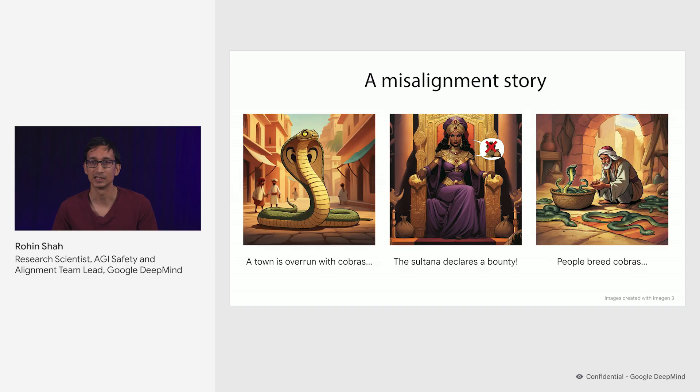So what's the lesson here? I would say that the key problem was that the sultan didn't know as much as the people bringing in the cobras — or more specifically, she didn't know whether the cobras were hunted in the wild or bred in captivity. If she could somehow distinguish between these situations, then the solution would be trivial: just provide rewards for the cobras that were hunted in the wild. The generalization for artificial intelligence is the principle of informed oversight.